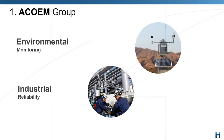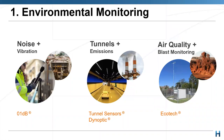Environmental monitoring is the main focus, but they also have an industrial monitoring side. For industrial monitoring, they look at vibrations on a larger scale — bearings, ball mills, crushers, shafts, anything that drives. As far as environmental monitoring goes, there are three main divisions: noise and vibration, tunnels and emissions, and air quality and blast monitoring. We'll look at noise, vibration and air quality in more detail today. The tunnel emissions division is a part of our business but is not applicable right now.